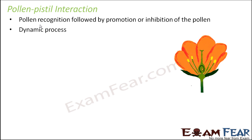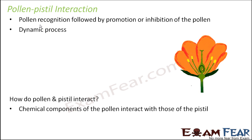This is a dynamic process, not a static one — it keeps happening as and when needed. The dialogue exchange actually occurs with the help of chemicals. There are certain chemicals released by the pollen which are recognized by the pistil, and these chemicals help the pistil decide whether this is the right pollen or the wrong one. That is how compatibility and incompatibility are decided.